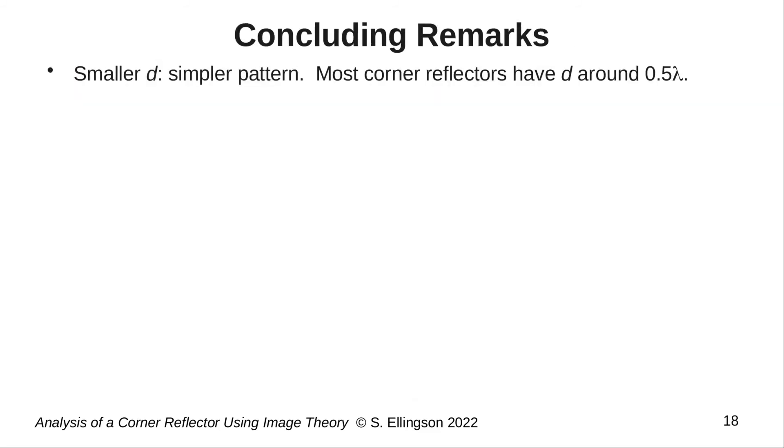So now, some concluding remarks. First, I mentioned that corner reflectors typically have D around 0.5 wavelengths, as opposed to the 1.5 wavelengths that I've used in this analysis. Generally, the smaller value of D gives you a simpler pattern that does not have the lobes that you may have noticed in the pattern that I showed. This analysis, however, will work equally well for that smaller spacing.